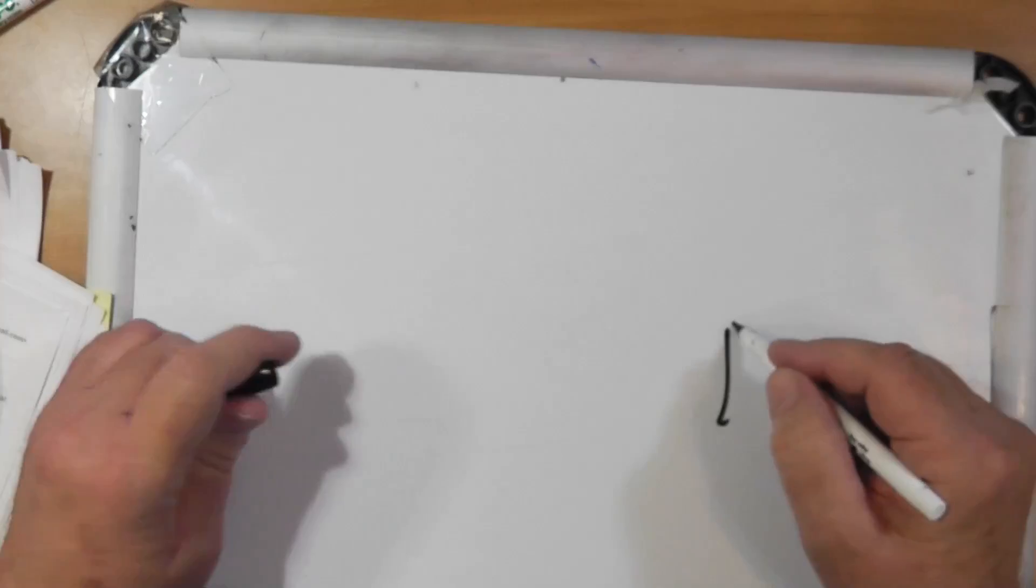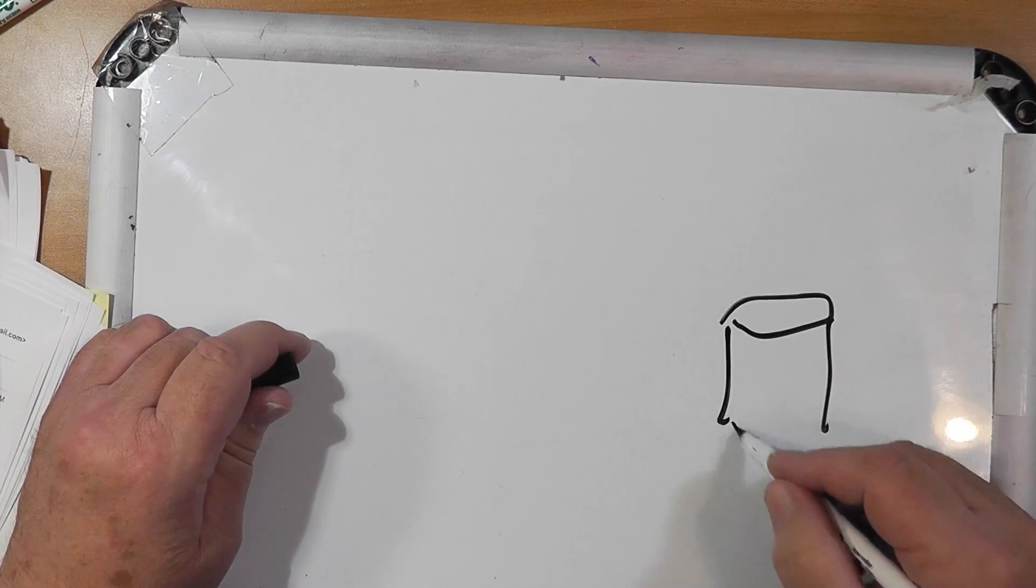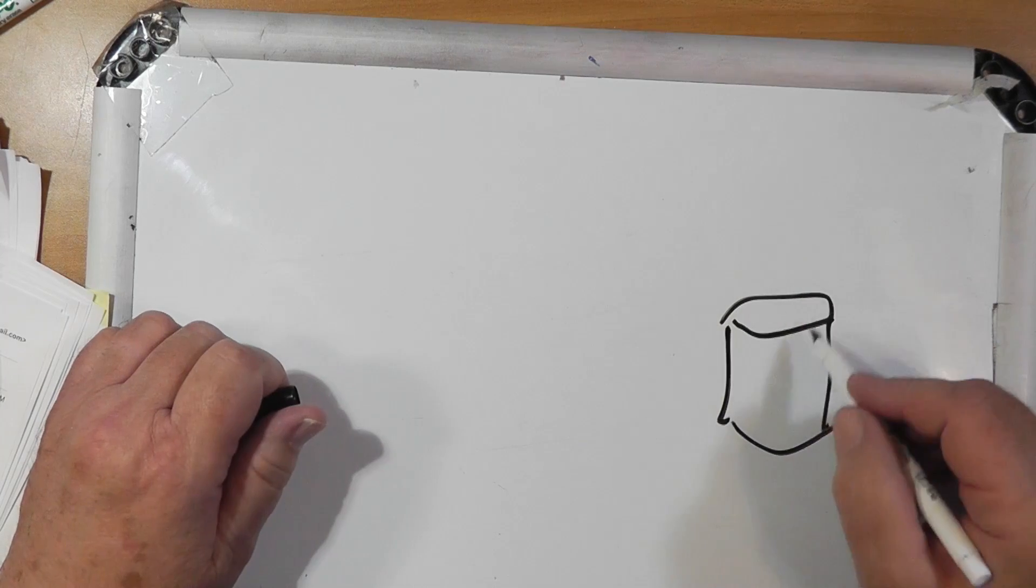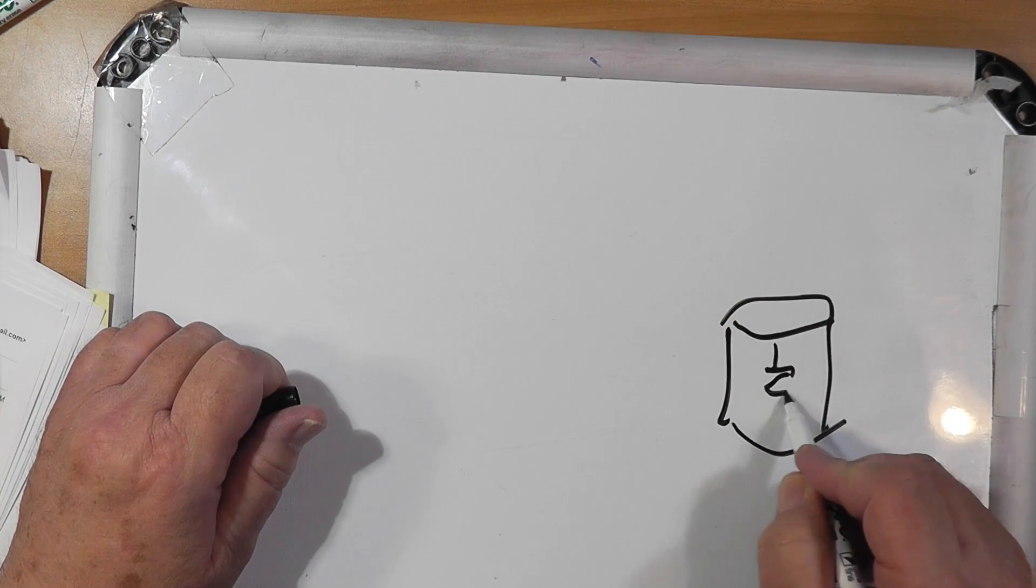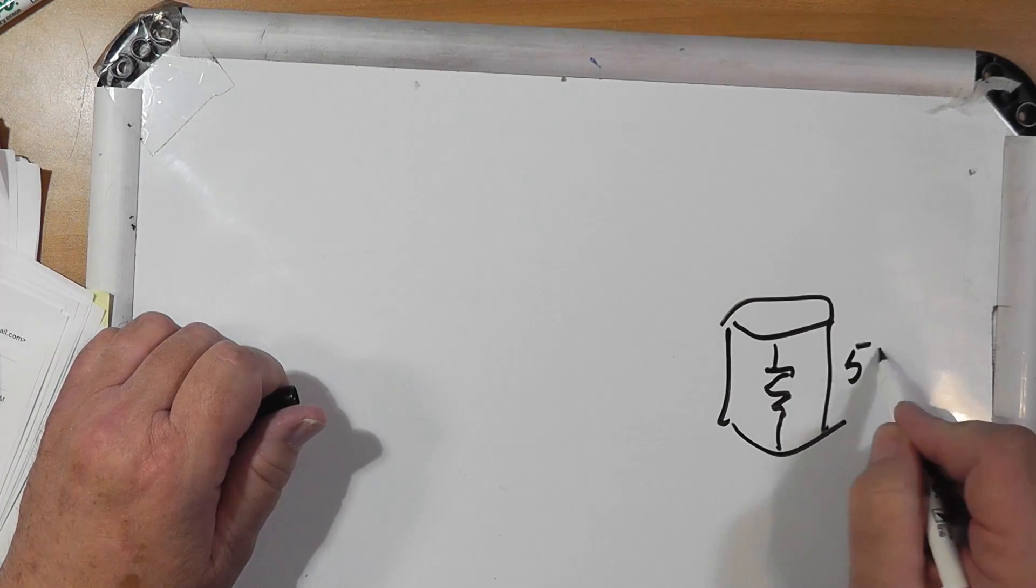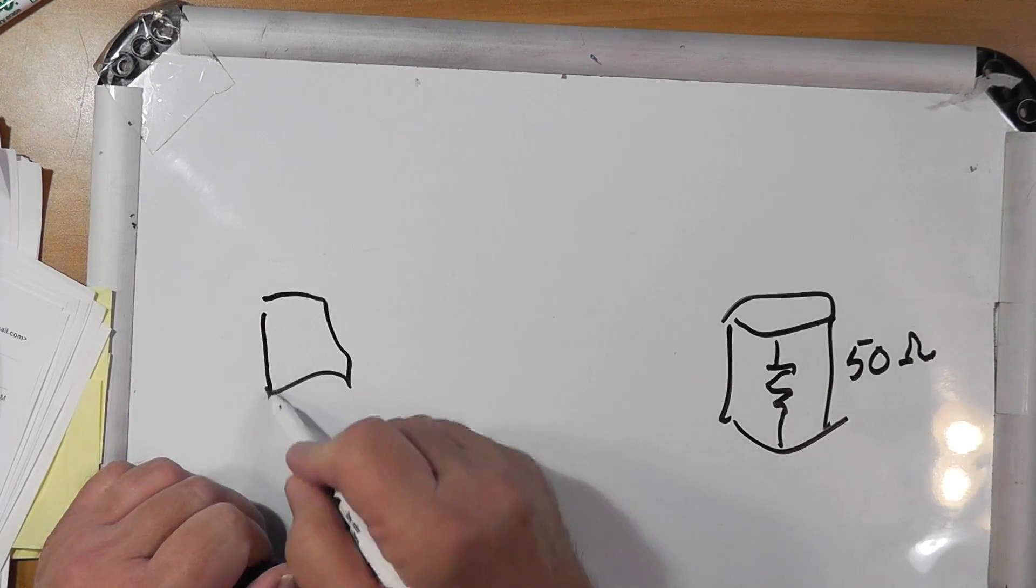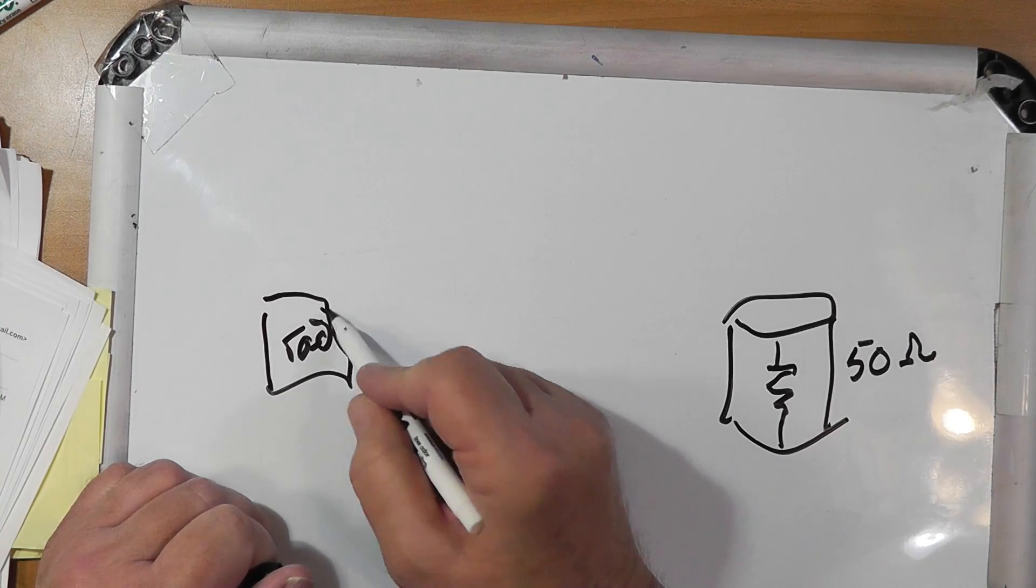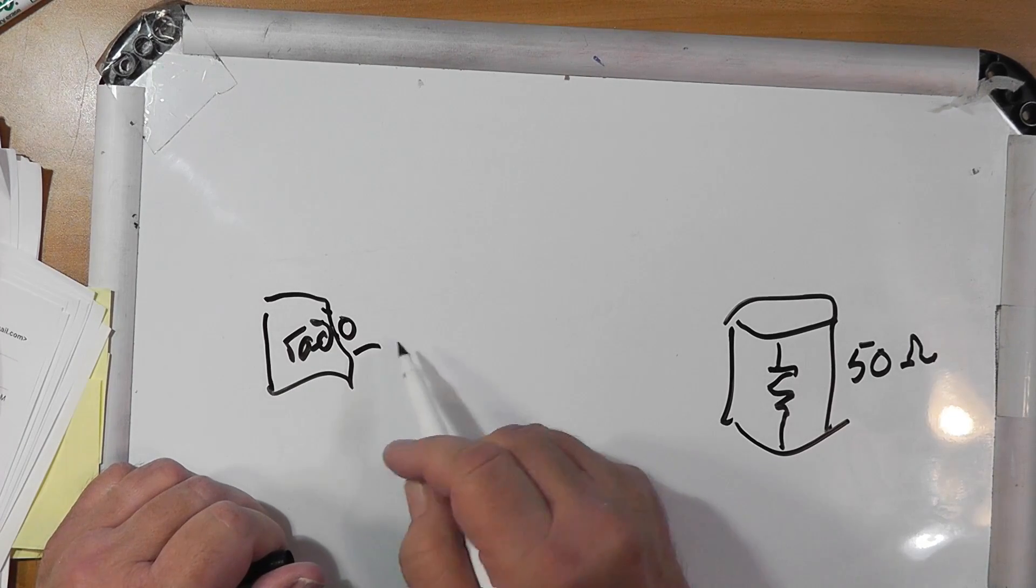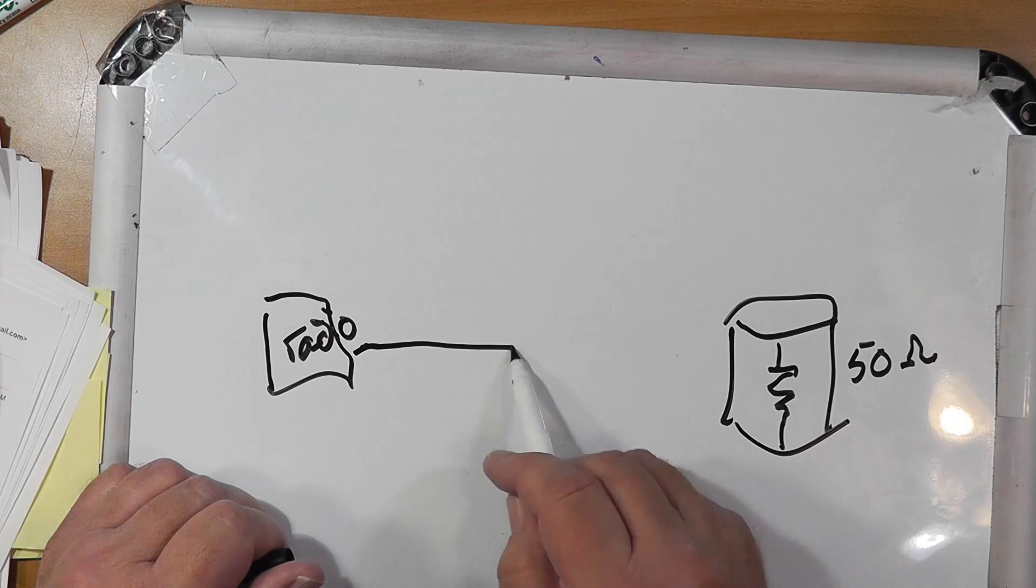So I'm going to draw the dummy load. Whatever yours looks like, it's basically just a big 50 ohm resistor. And you've got your radio.